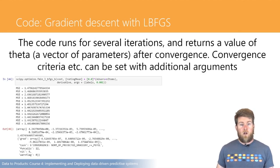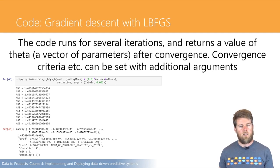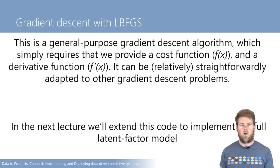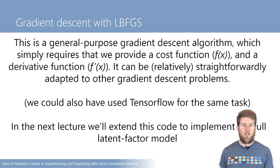Let's actually try running this code. It's going to run for several iterations, printing out the mean squared error during each iteration because we wrote that code inside the cost function. There are various convergence criteria that this algorithm uses to determine when gradient descent has found a good enough solution. You could experiment with those convergence criteria to try and get a slightly better solution, but this one runs for just a few iterations and then returns a vector of parameter values. This is a general-purpose gradient descent algorithm requiring just a cost function f(x) and derivative f'(x). You could also have used TensorFlow for the same task.